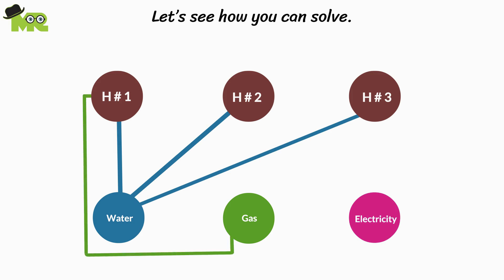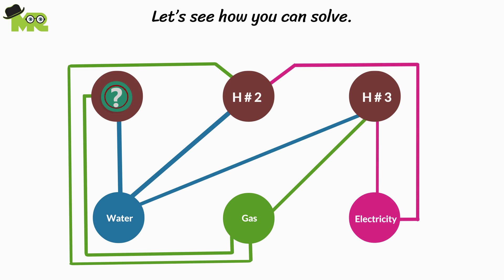Next, in the same way, take the gas line to all three houses. Lastly, take the electrical line to house number three, then the second house. Now it seems like we don't have a way to take the electricity line directly to house number one. What will you do now?